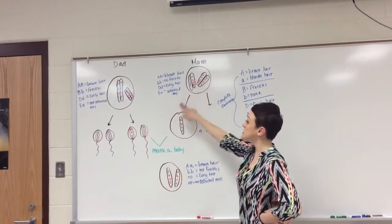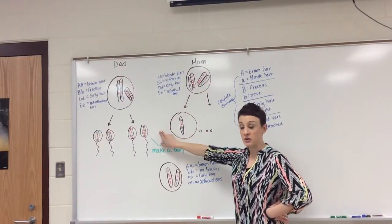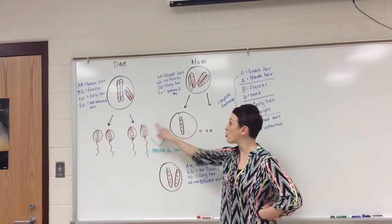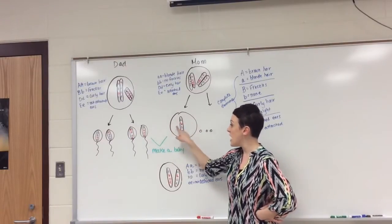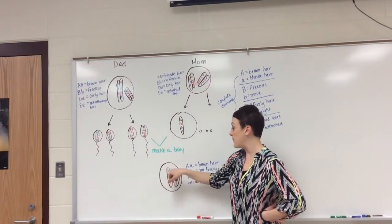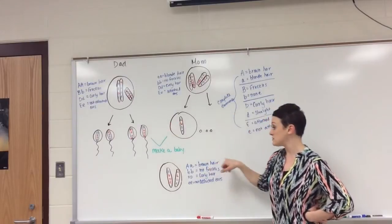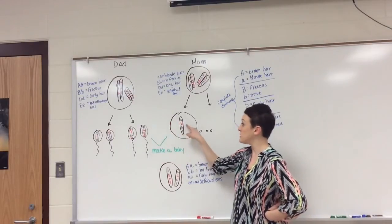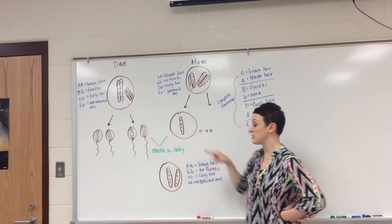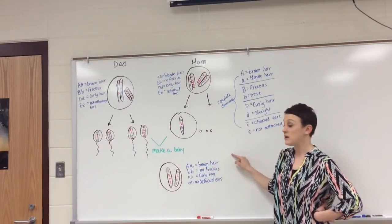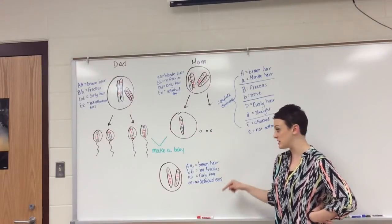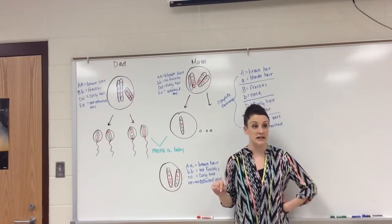When egg and sperm came together, they made a baby according to the letters on each of these pieces of DNA. So baby ended up being big A, little A, little B, little B, big D, big D, and little E, little E. So baby has brown hair, no freckles, his or her hair is curly, and her earlobes are not attached.